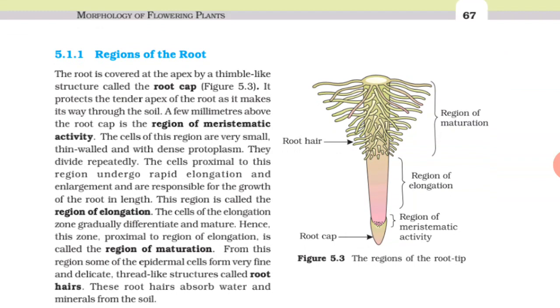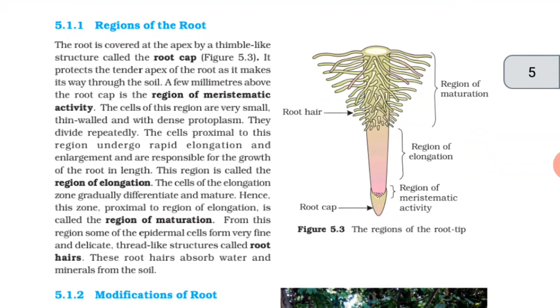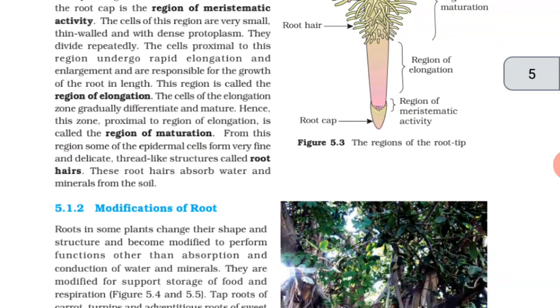The cells of the elongation zone gradually differentiate and mature. Hence, the zone proximal to region of elongation is called the region of maturation. From this region, some of the epidermal cells form very fine and delicate thread-like structures called root hairs. These root hairs absorb water and minerals from the soil.